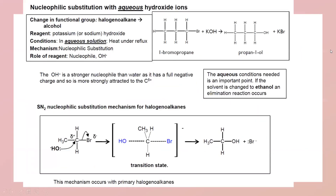The first reaction is nucleophilic substitution. We will discuss hydrolysis later. The reagents used are potassium hydroxide or sodium hydroxide. The conditions are aqueous solution and heat under reflux. From an exam point of view, you should be able to label what conditions are needed for nucleophilic substitution reaction.